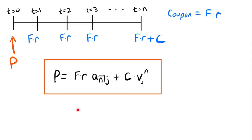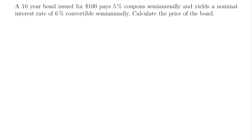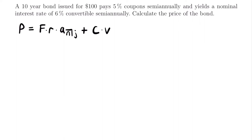Now let's look at an example. A 10-year bond issued for $100 pays a 5% coupon semi-annually and yields a nominal interest rate of 6% convertible semi-annually. Calculate the price of the bond. The price equals F times r times a-angle-n at j, plus C times the present value factor to the power of n at j.